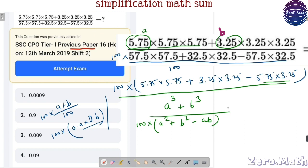Now, simply solve this question. As we learned earlier, like a cubed plus b cubed is a plus b into a squared plus b squared minus ab. And this denominator will be 100 times a squared plus b squared minus ab.